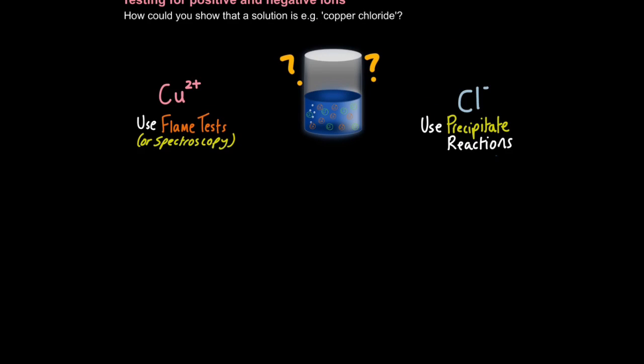And now that they're separated we can test them. There are two types of tests you need to be aware of. Firstly, use flame tests or flame test spectroscopy to test for metal ions, positively charged ones, and use precipitate reactions to test for negative ions. So in this specific example I'll be testing for copper ions using flame testing and chloride ions using precipitate reactions.